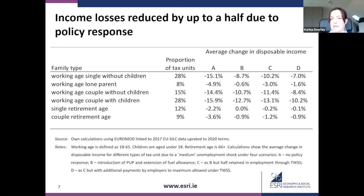Moving from scenario B to C, where we introduce the temporary wage subsidy scheme, slightly increases losses compared to scenario B, because not everyone is going to be getting as much as they were under the pandemic unemployment payment, as the temporary wage subsidy scheme is a function of their previous earnings. Scenario D is the best-case scenario in terms of disposable income losses for families, because employer top-ups play a large role in cushioning the income of families subject to these unemployment shocks.